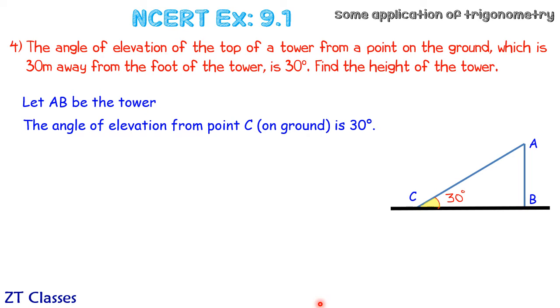Now in this, we have to find the height of the tower and what's given is BC, which is 30 meters. So AB is perpendicular and BC is the base. So we'll use tan theta.